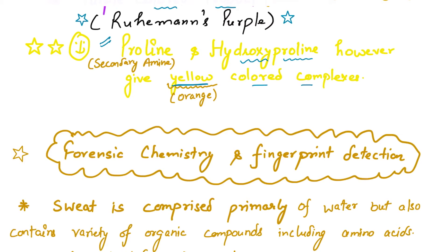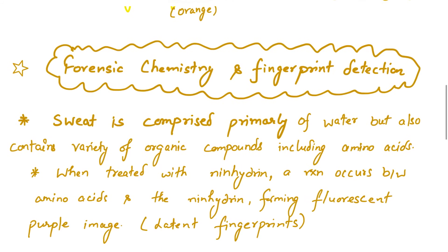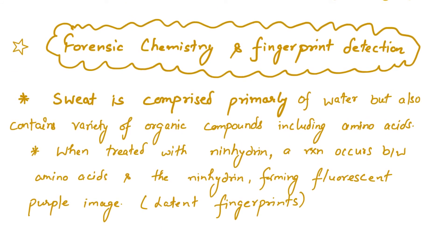This reaction is very important in forensic chemistry for fingerprint detection. Our sweat primarily comprises water, but it also contains many organic compounds that include amino acids. Whenever ninhydrin is treated with these amino acids, a reaction occurs that forms a fluorescent purple image — nothing but latent fingerprints. So it is quite useful in forensic chemistry and fingerprint detection.